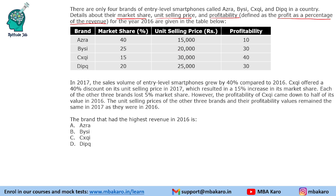We are given some information about 2017, so this data is about 2016. It says in 2017 the sales volume of entry level smartphones grew by 40% compared to 2016. Since we are not given the number of units, let us say there were 100 units in 2016, so the total number of units in 2017 will be 140.